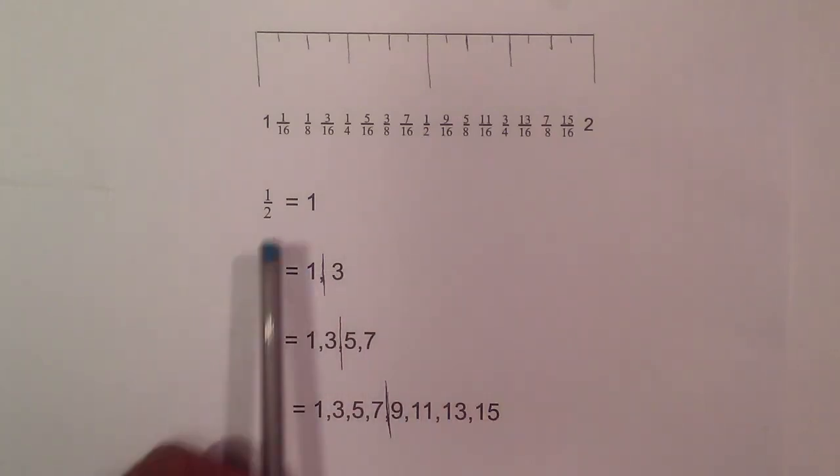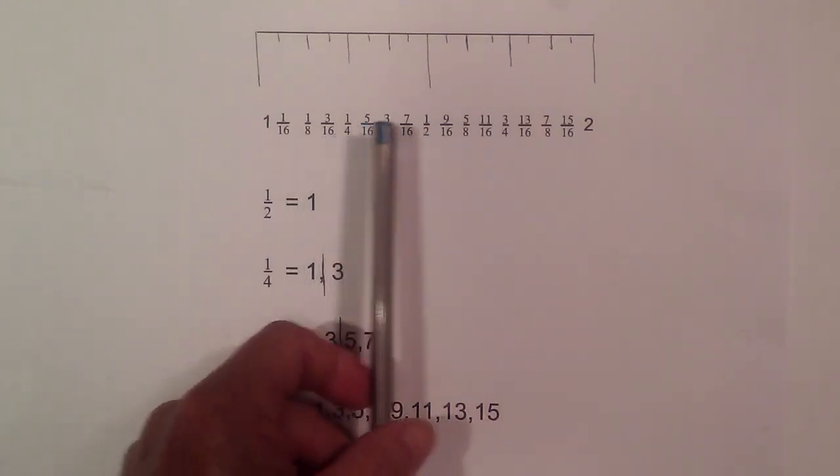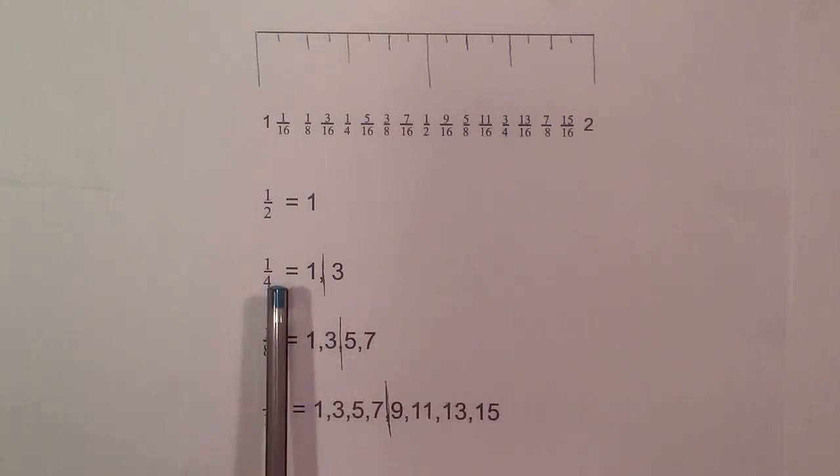With one fourth, you have one fourth and three fourths. So the pattern is just one and three. And also, why is this line in between? Because that's where your one half is. So all you need to remember is that one fourth tick, you only have one before one half, and three after one half.